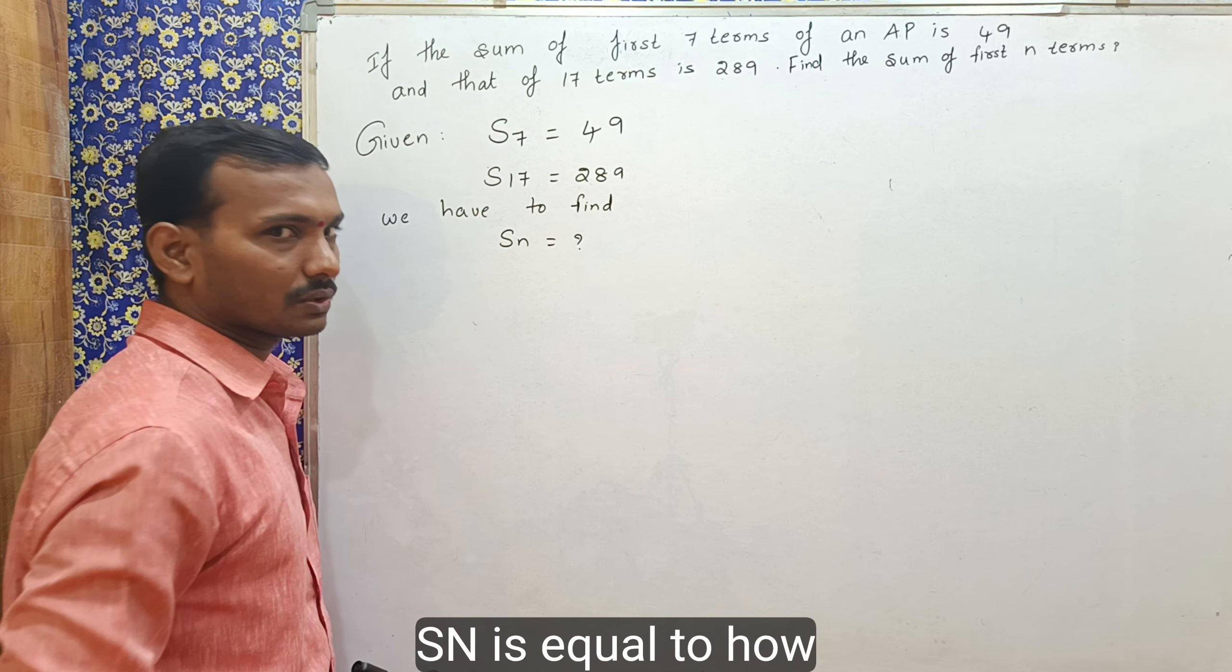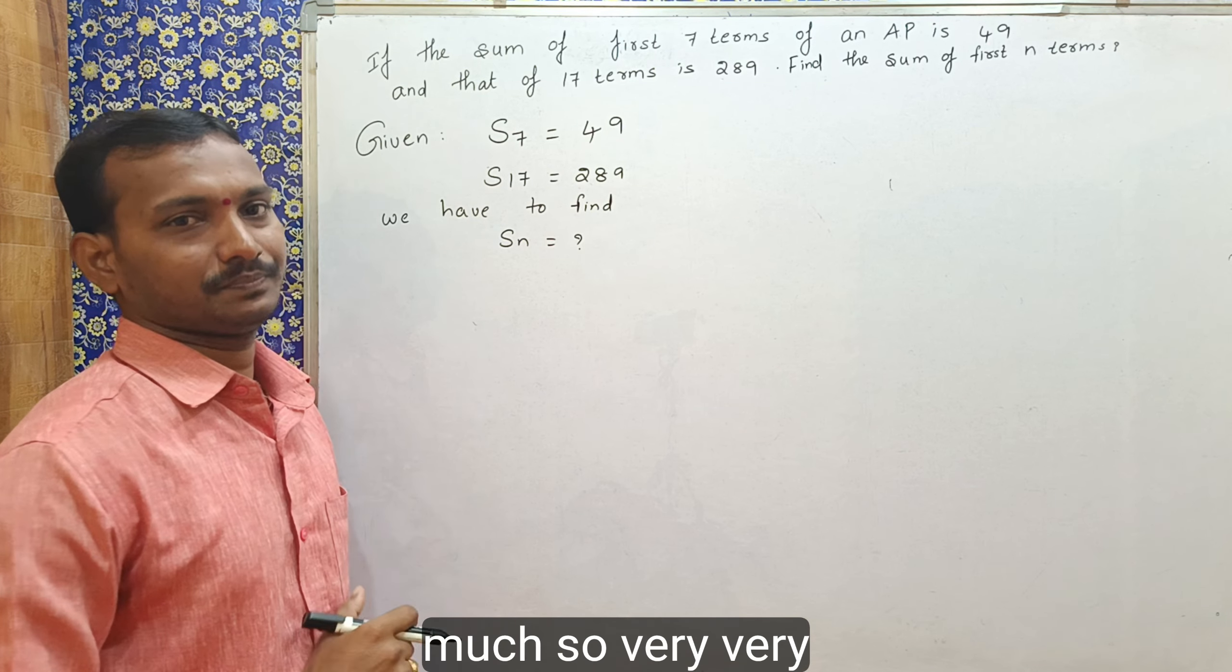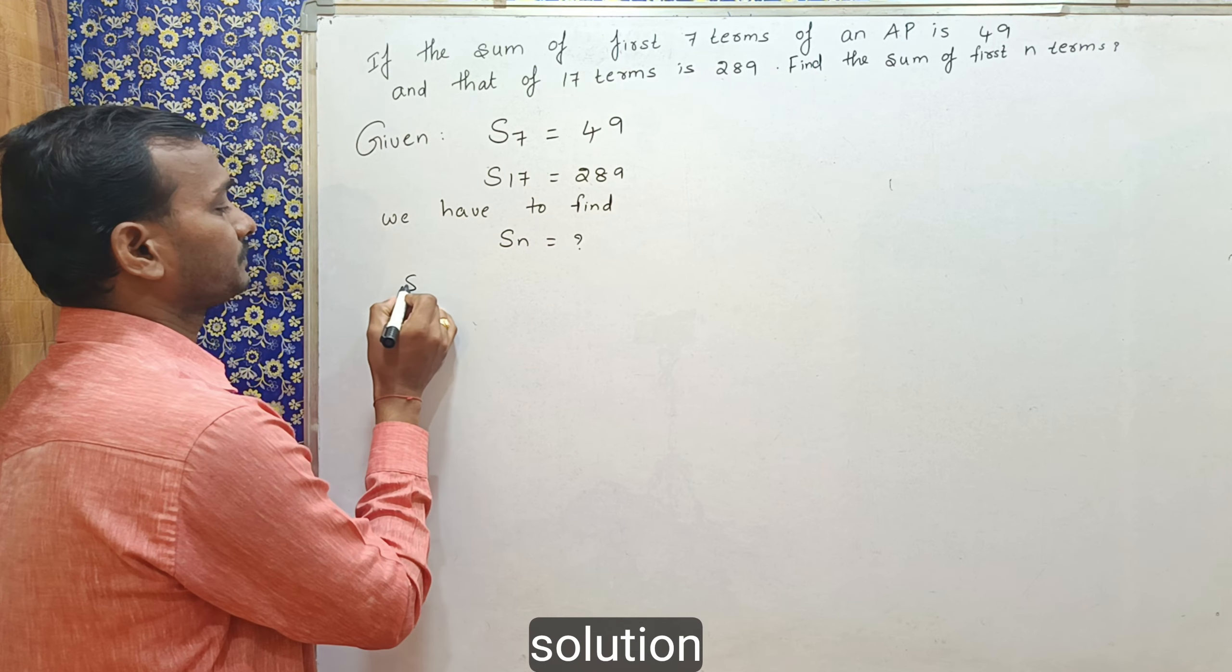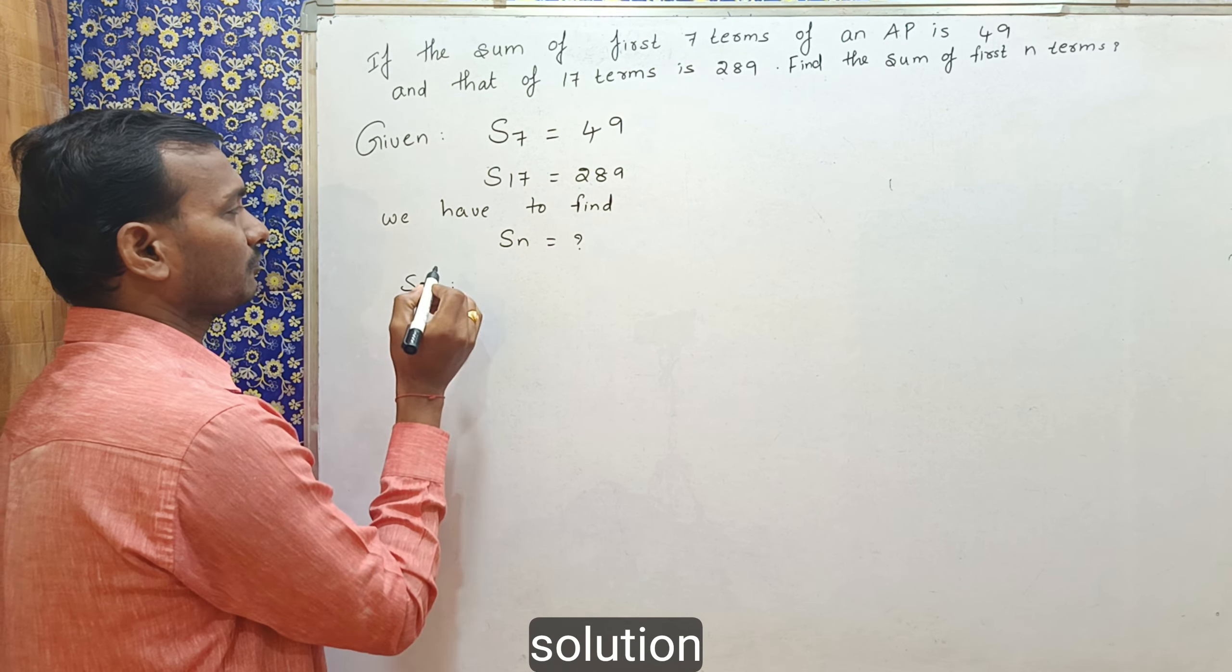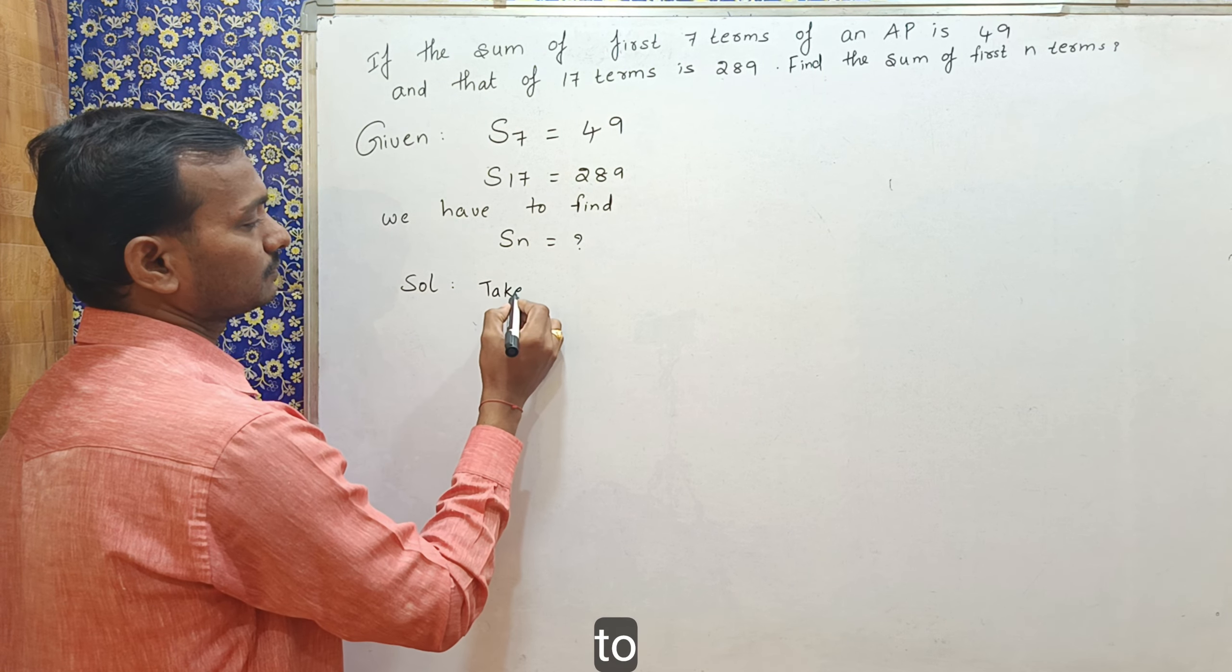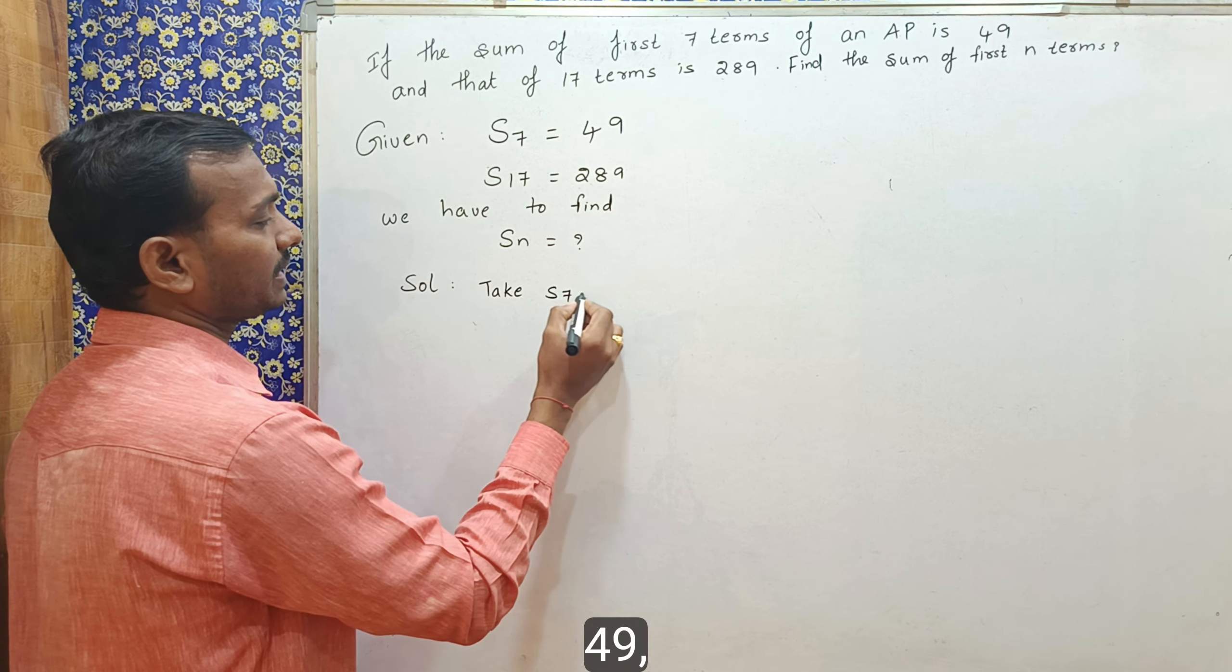S7 is equal to 49. So, very simple solution. First, we will take S7 is equal to 49.